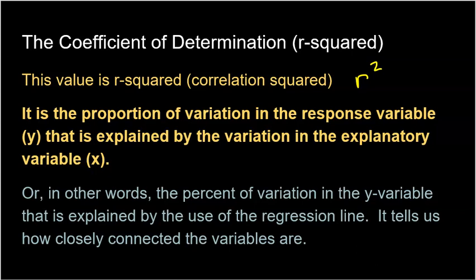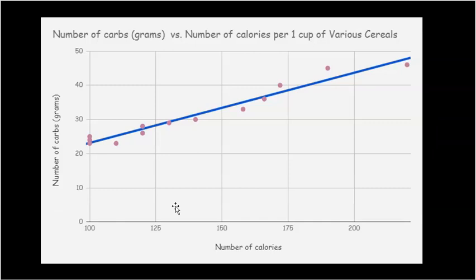Here is a scatter plot of calories in cereal versus number of carbs in cereal. We looked at several different cereals to see how many calories were in a serving versus how many carbs. Clearly there's a very linear scatter plot and the linear regression model fits it very, very well — all of the residuals are very small. These two variables are very strongly connected. If the coefficient of determination is something like 0.95, that means 95% of the variation in carbs is explained by the variation in calories.